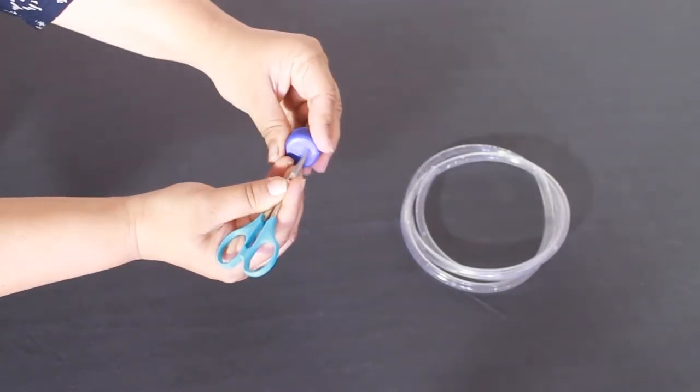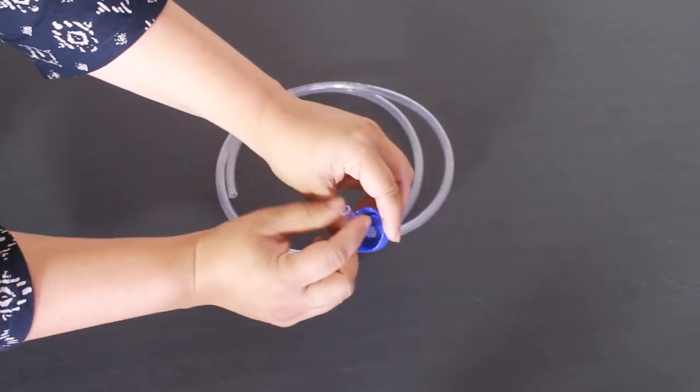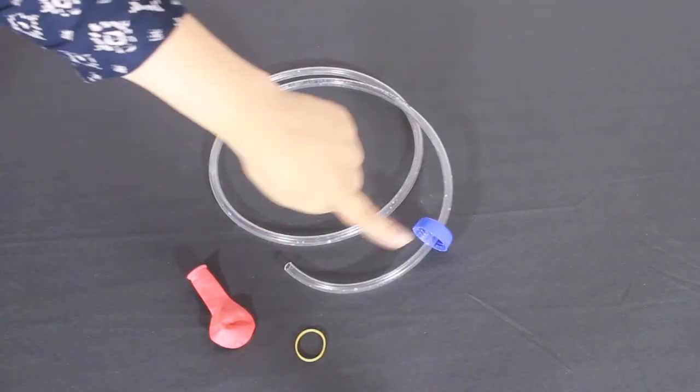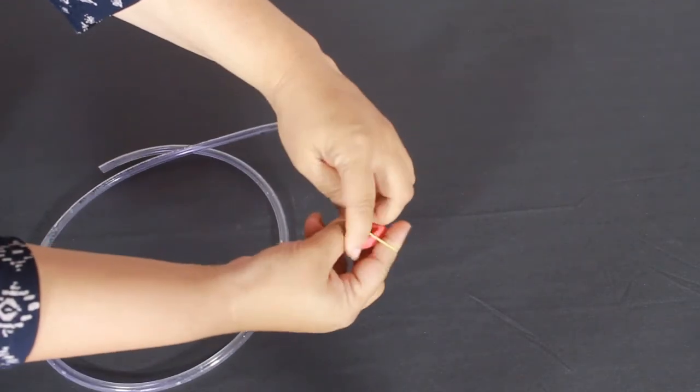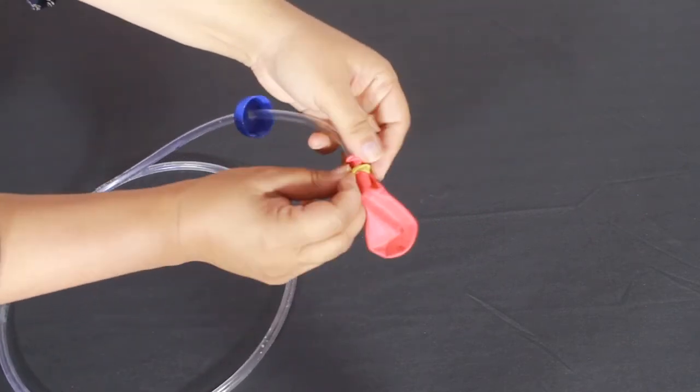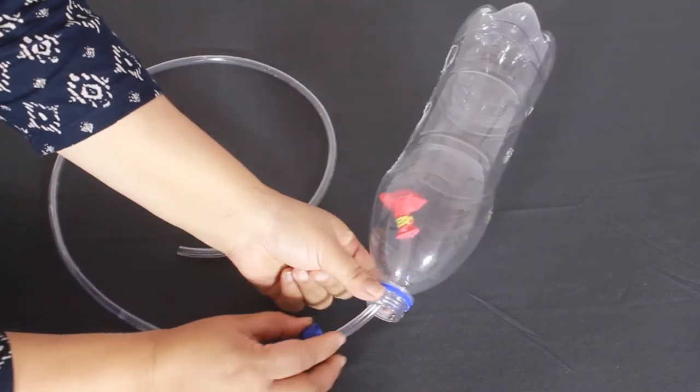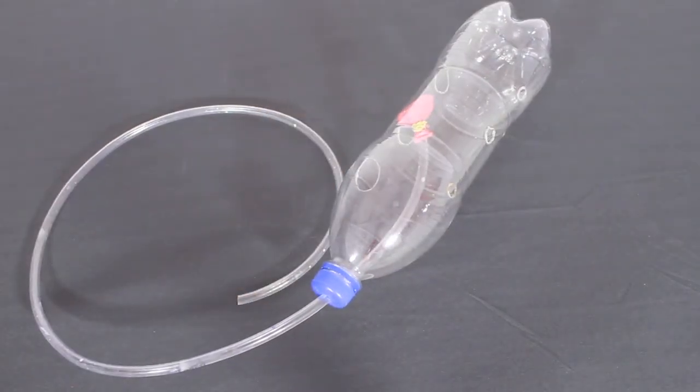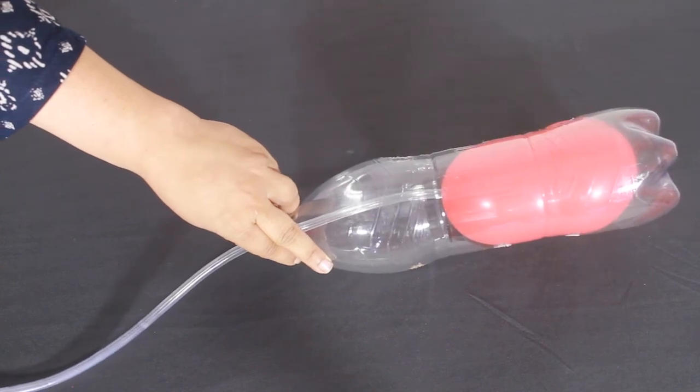Take a scissor and poke a hole in the cap of the bottle. Put the plastic tube through this hole. Please be very careful when using scissors. Once the plastic pipe is in, we will attach a balloon to one end of the pipe such that the balloon goes inside the bottle. Secure the balloon to the pipe with rubber band so that there is no leakage of air. Try to place the balloon in the middle of the bottle by adjusting the length of the pipe. Fit the cap back to the bottle. From the open side of the plastic pipe, try blowing air to blow up the balloon. It works!